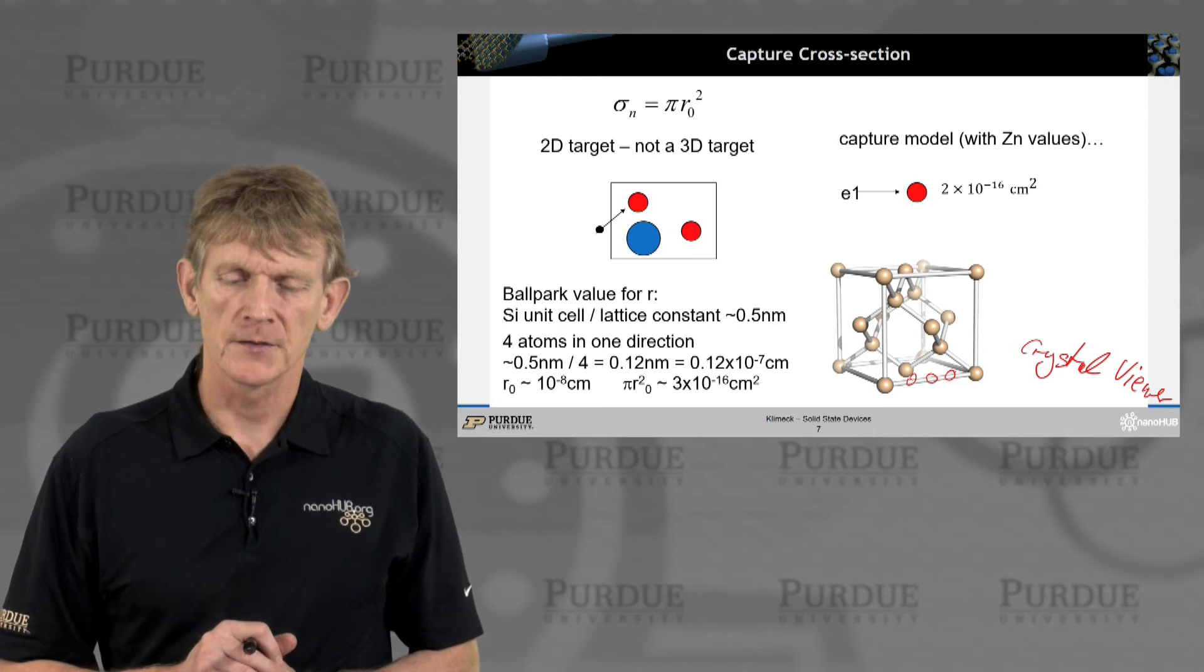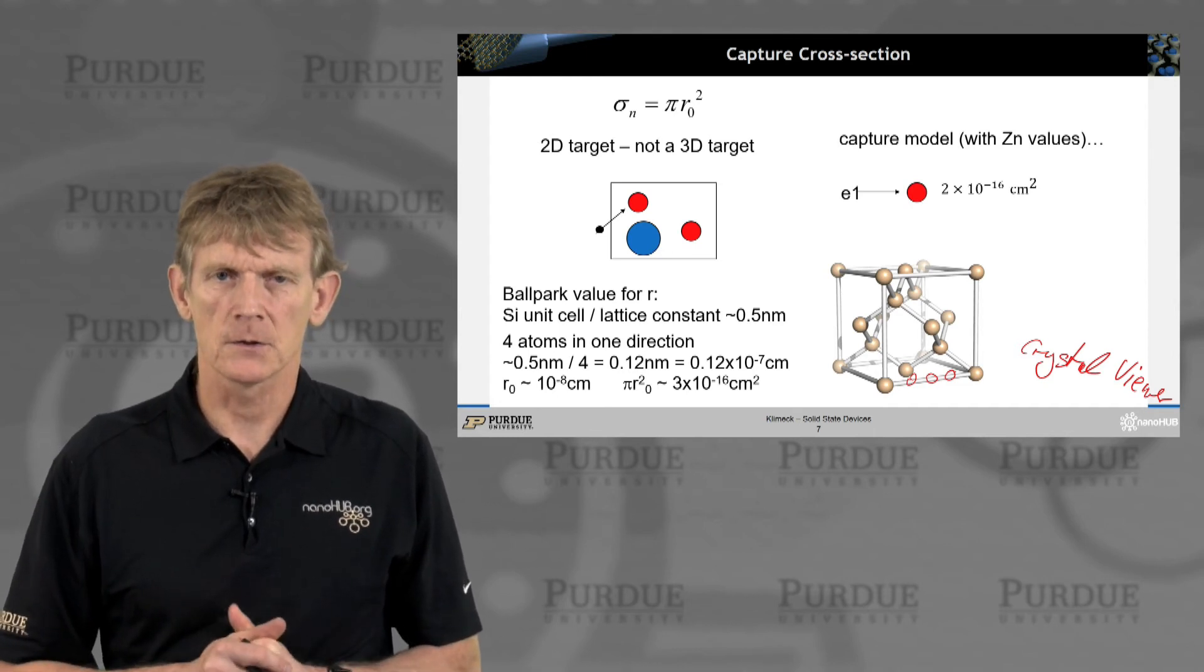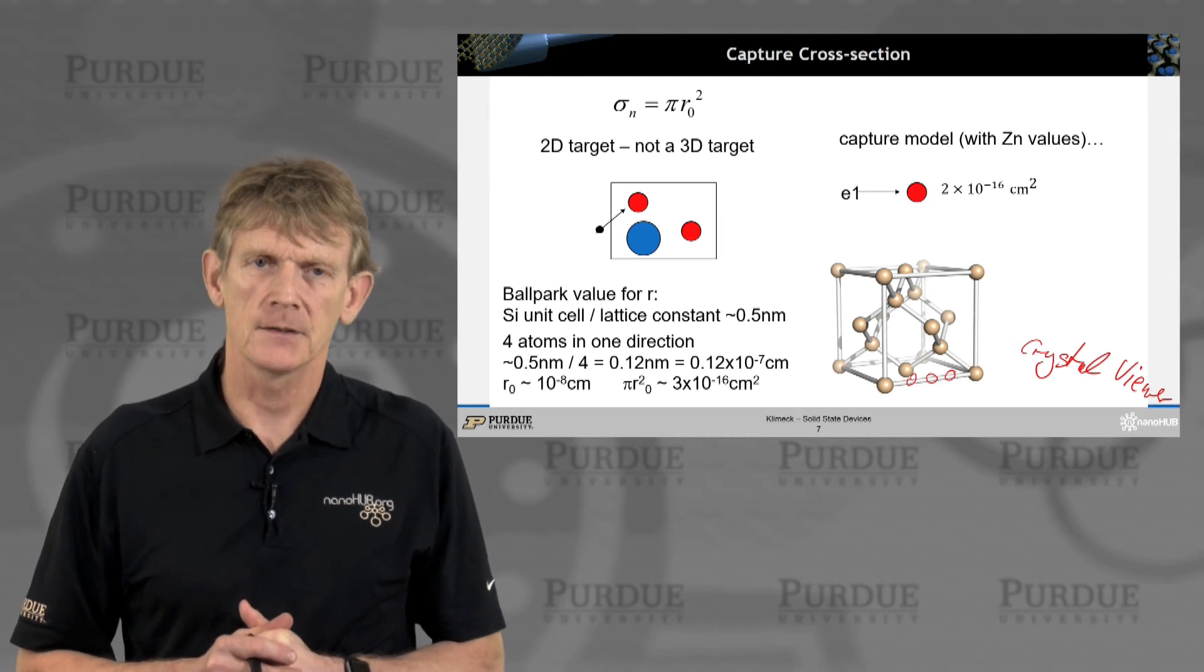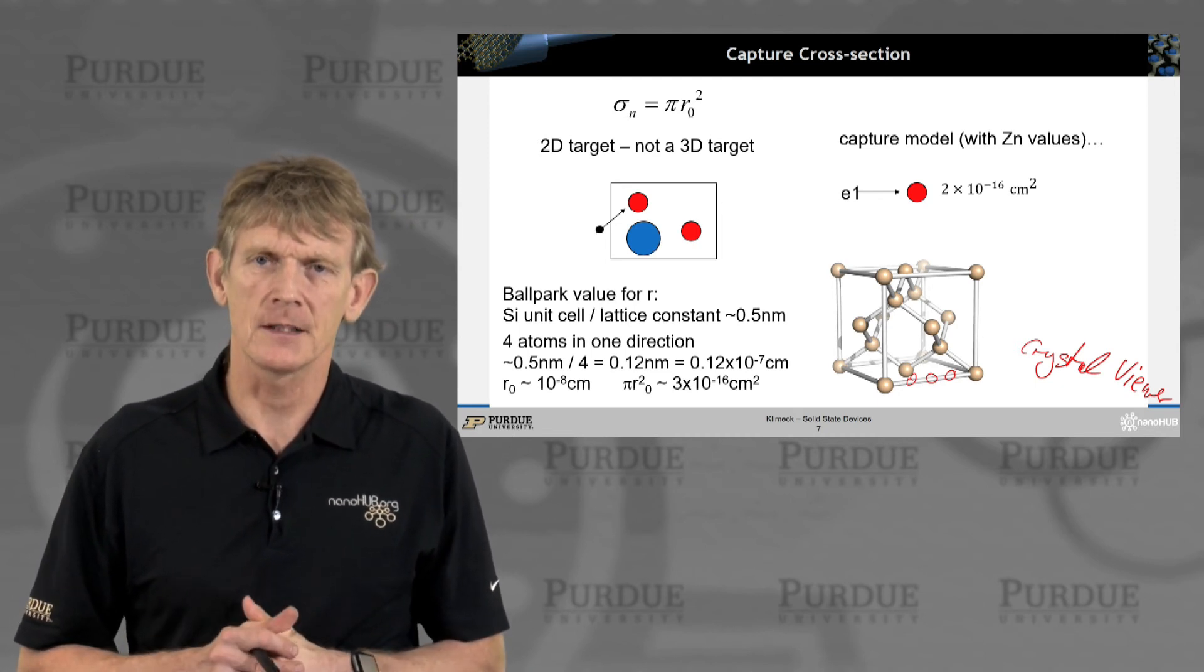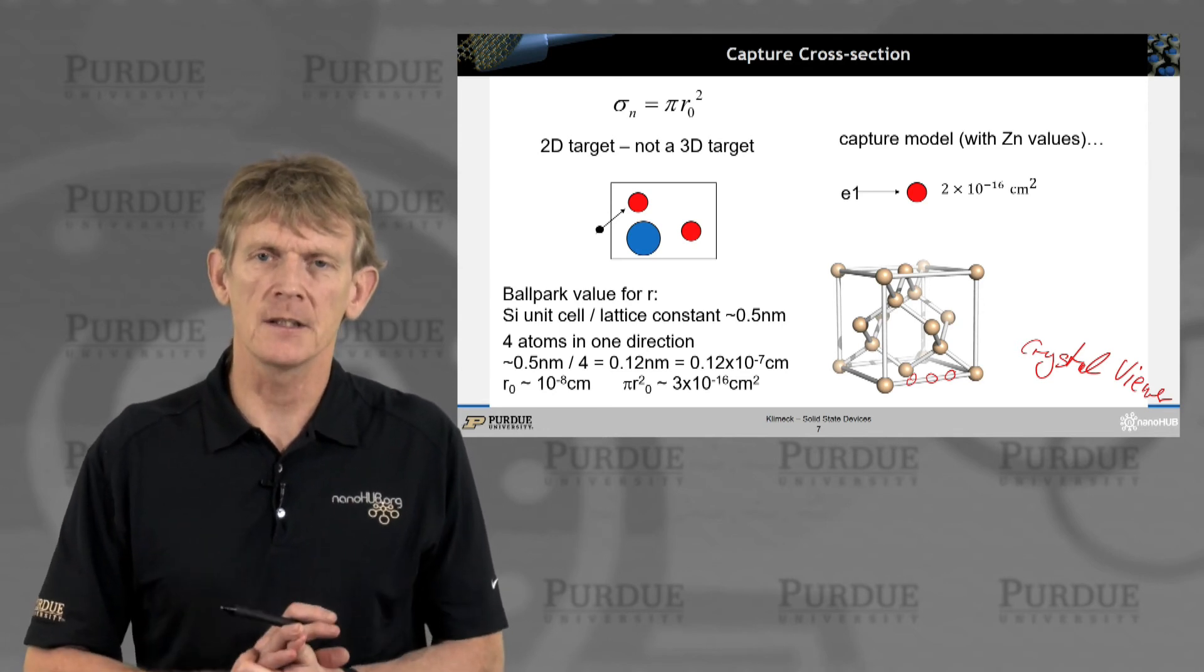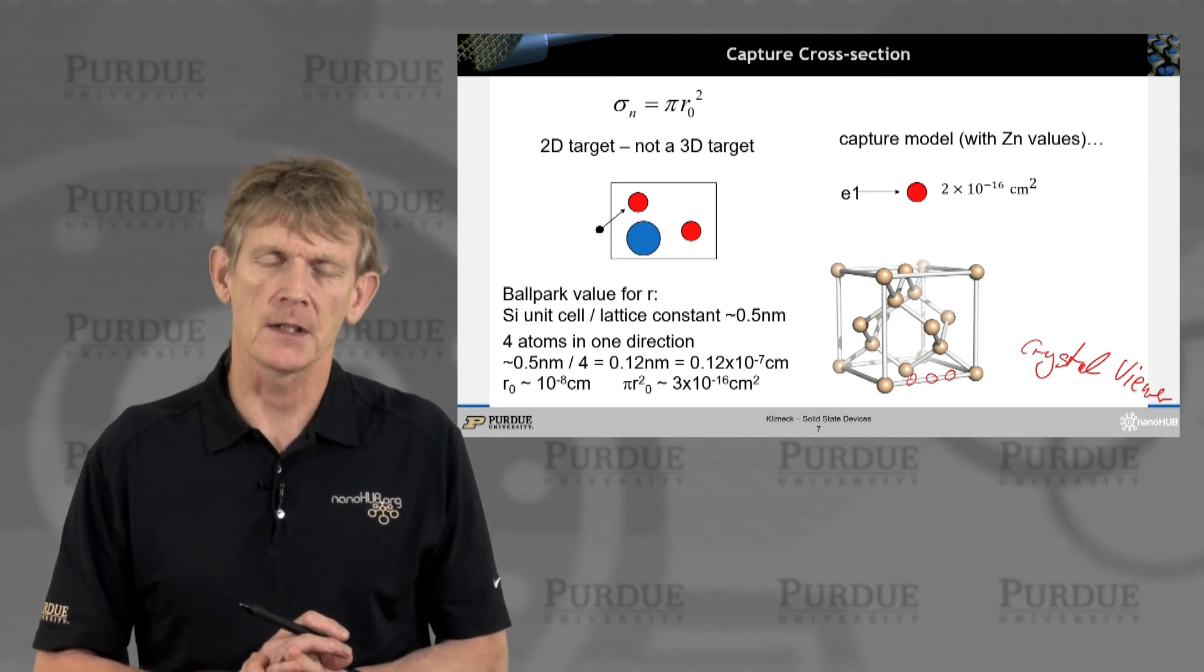So, for zinc, you can measure these things, because zinc was an important recombination center. And it turns out the numbers are 2 times 10 to the minus 16 square centimeters. So, this is how you roughly get some numbers that make sense.